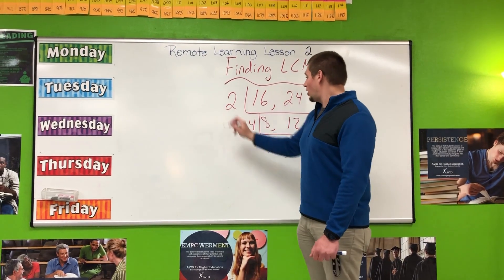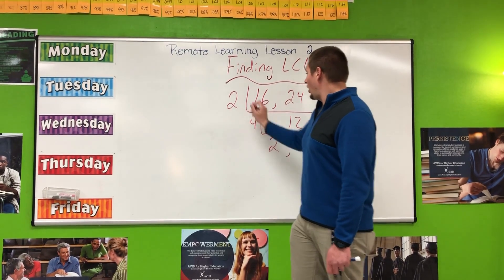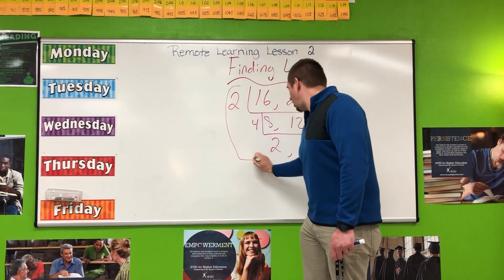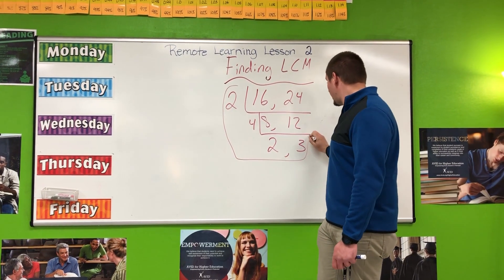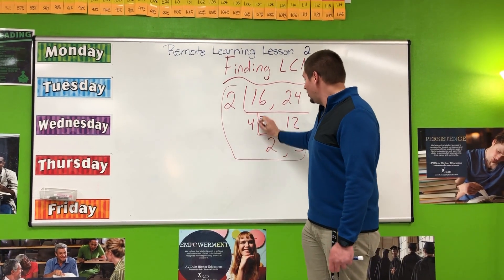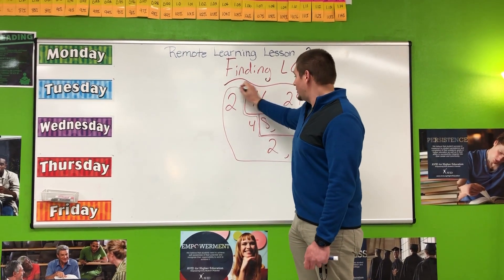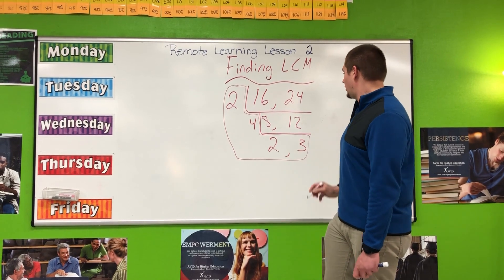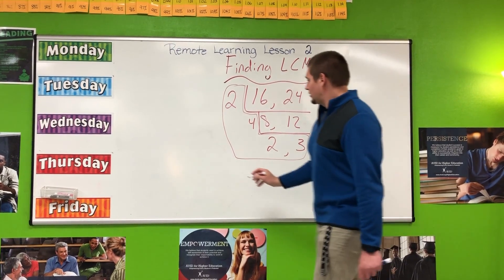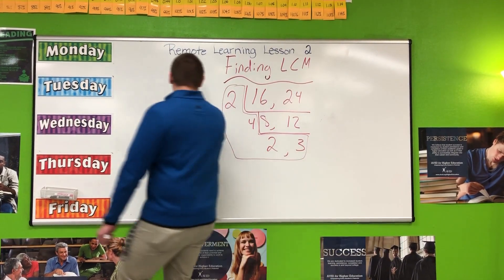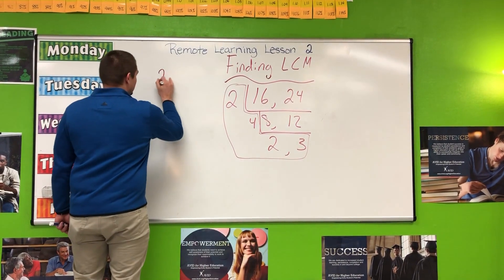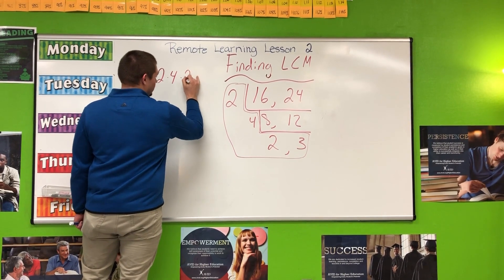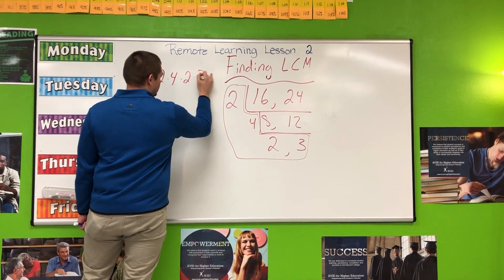Instead of creating our G, all I'm going to do is circle all of the numbers, creating an L for least common multiple, and then I'm going to multiply these four numbers together. So, I have 2 times 4 times 2 times 3.